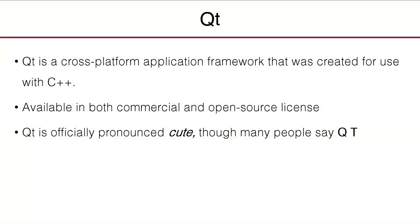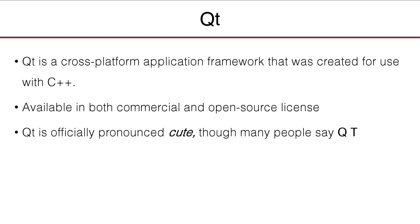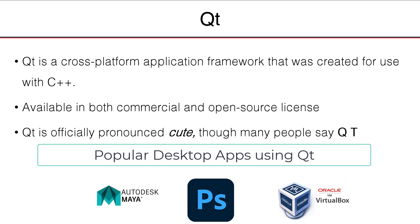Qt is a cross-platform application framework that was created for use with C++. It is available for both commercial and open source license, and is widely used by open source projects such as KDE Plasma, Oracle VirtualBox, and commercial software such as Adobe Photoshop Elements, Autodesk Maya.